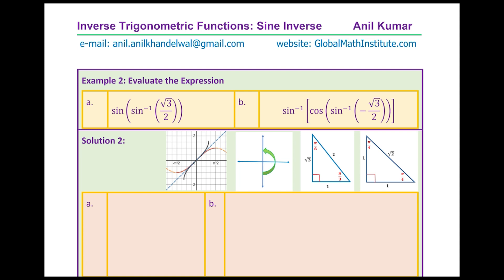Example 2: evaluate (A) sine of sine inverse of root 3 over 2, and (B) sine inverse of cosine of sine inverse of minus root 3 over 2. You could have nested functions as shown. The strategy is to work from inside out. So we have sine of — what is sine inverse of root 3 over 2? From the special triangle, sine inverse of root 3 over 2 equals pi by 3. So we have sine of pi by 3.